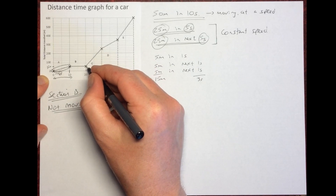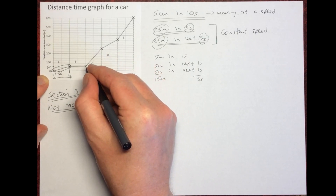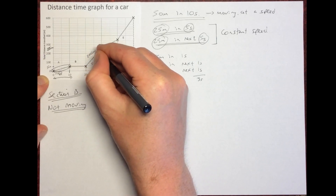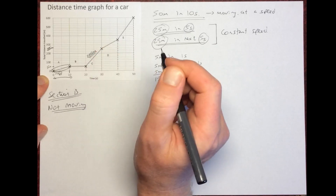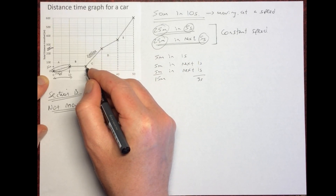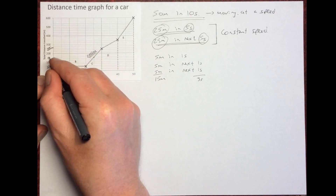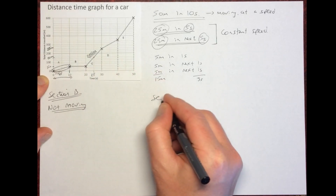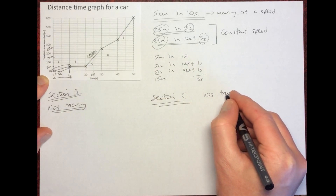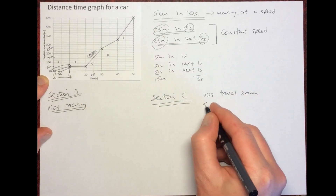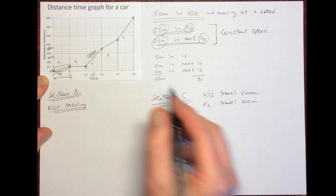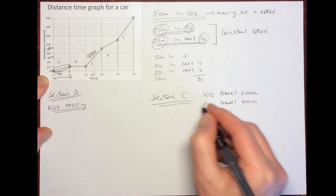Looking at section C: after 20 seconds we've traveled 50 meters, and after 30 seconds we've traveled 250 meters — a total distance of 200 meters in this section. After 25 seconds we've traveled from 50 up to 150 meters, so over the first five seconds of section C we travel 100 meters.